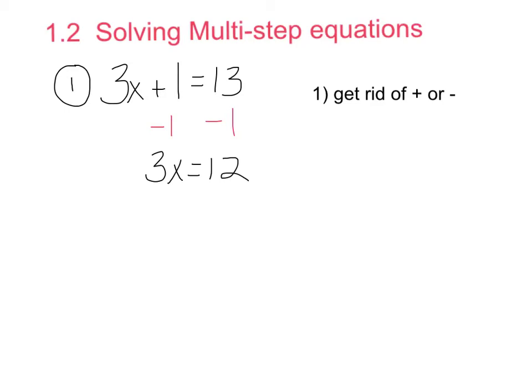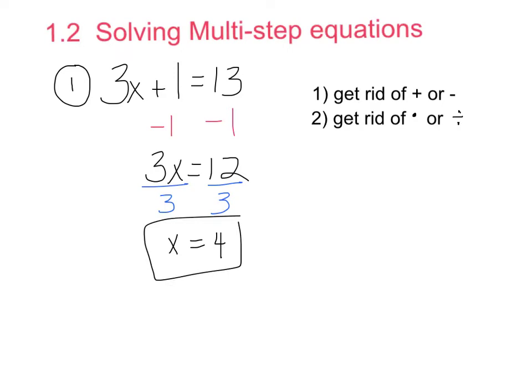The next thing you have to get rid of is multiplication or division. In this problem, you have to get rid of multiplying by 3, so you're going to divide both sides by 3. Therefore, your answer is x equals 4. This is a basic multi-step equation.